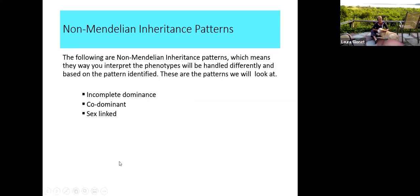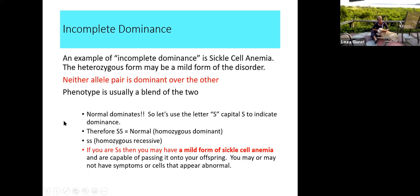We're going to look at incomplete dominance, co-dominance, and sex-linked inheritance. In incomplete dominance — an example being sickle cell anemia — one allele does not completely dominate over the other, so neither allele is really dominating. The phenotype is usually a blend of the two. The heterozygous form may be a mild form of the disorder.